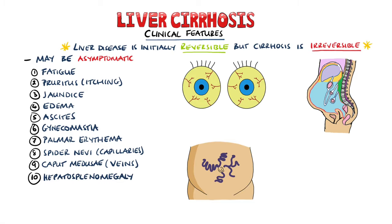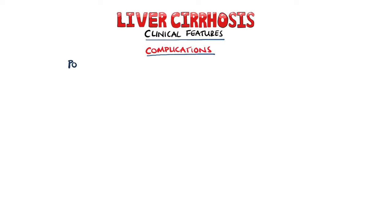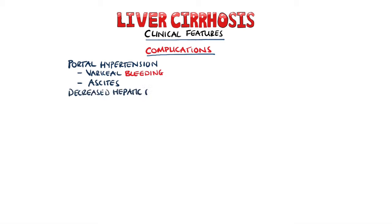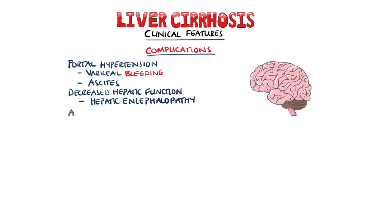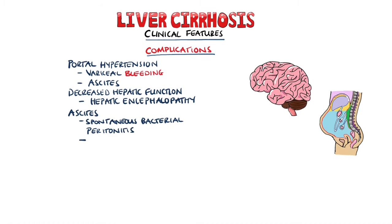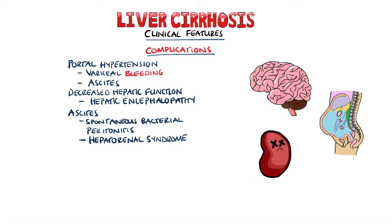Hepatosplenomegaly may also be seen. Patients can also present directly with complications, either of portal hypertension such as rupture of the varices, which can lead to catastrophic bleeding, or due to a decrease in liver function they may present with hepatic encephalopathy. The complications of ascites include conditions like spontaneous bacterial peritonitis and hepatorenal syndrome.